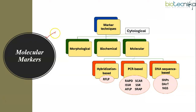No two individuals are alike. The difference between individuals is due to variations which occur at the genetic level. To detect these variations — to detect polymorphism in individuals — several marker techniques have been used, including morphological markers, biochemical markers, cytological markers, and molecular markers.